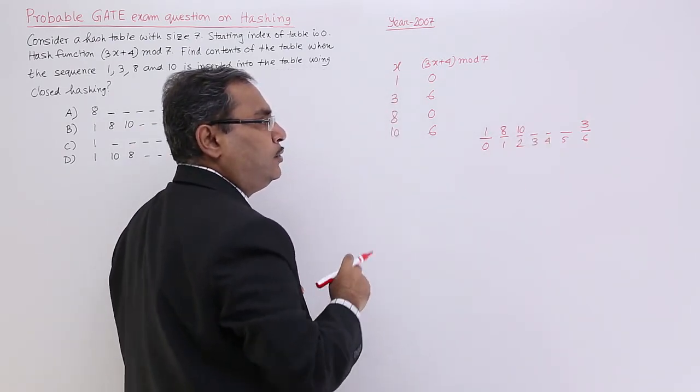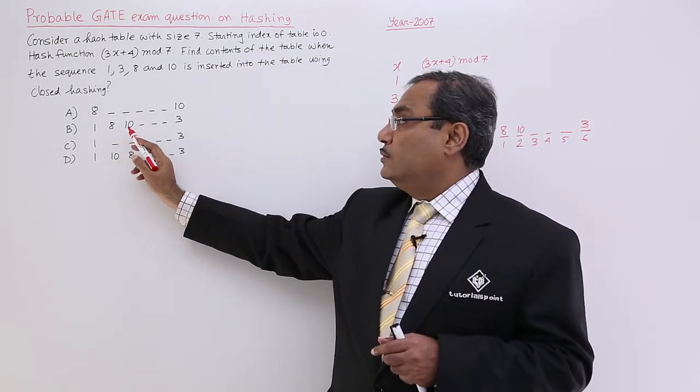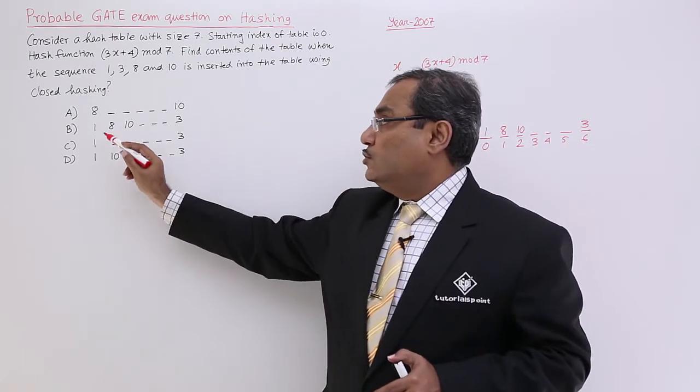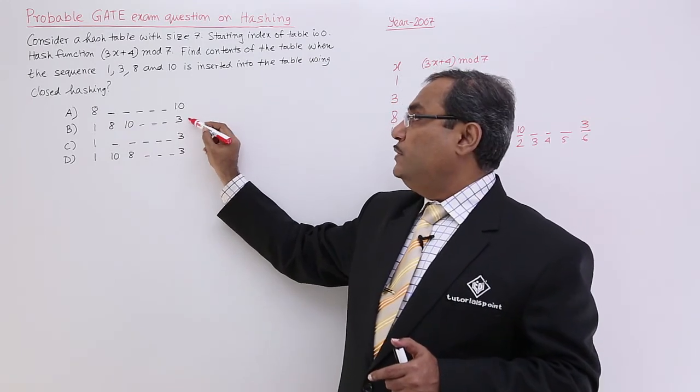1, 8, 0, 3 blank spaces and then we are having 3. So 1, 8, 10, 3 blank spaces and 3. I shall be going for the B option.